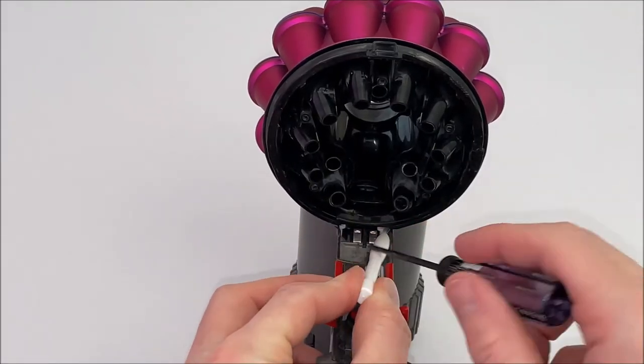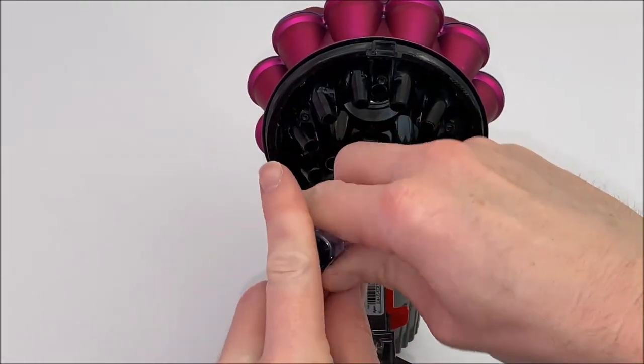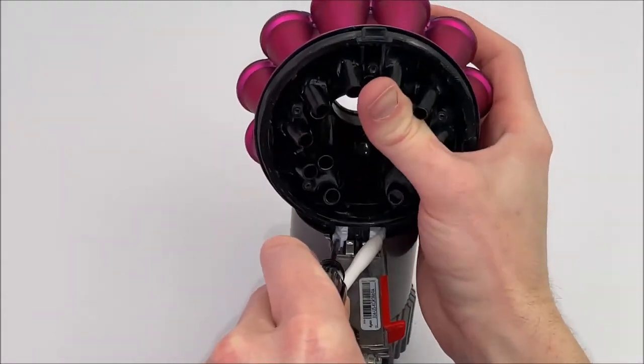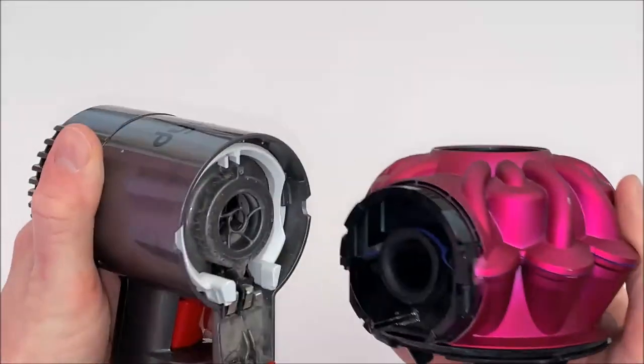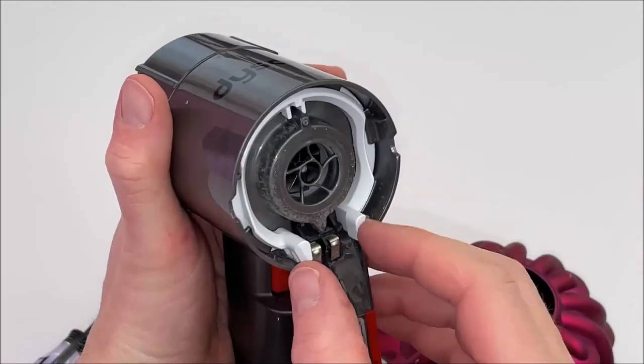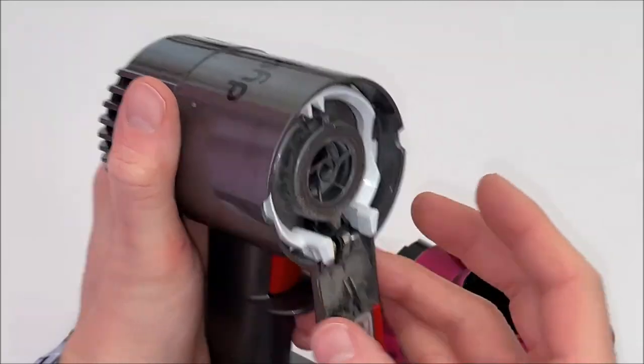Once the five screws are removed, we can remove the head unit from the main body of the vacuum. This is done by pressing in two white tabs that lock the head unit onto the body. Use the Torx screwdriver and the plastic pry tool to press the white clips in as seen here, then simply separate the two pieces.